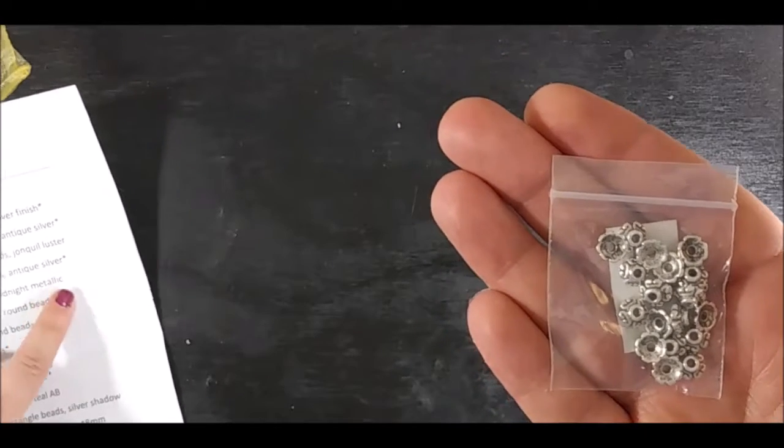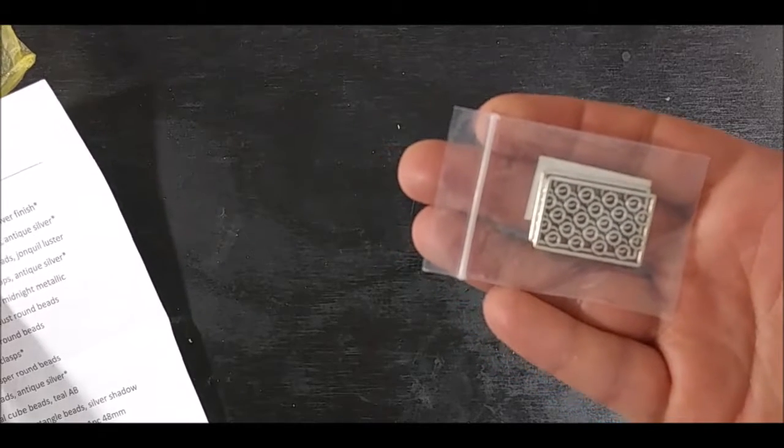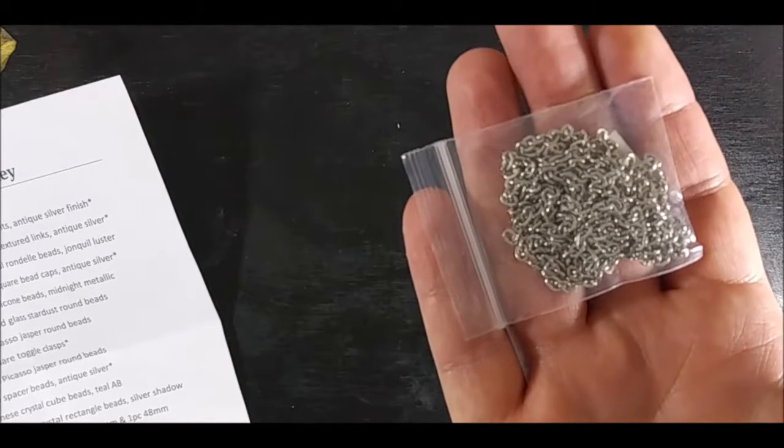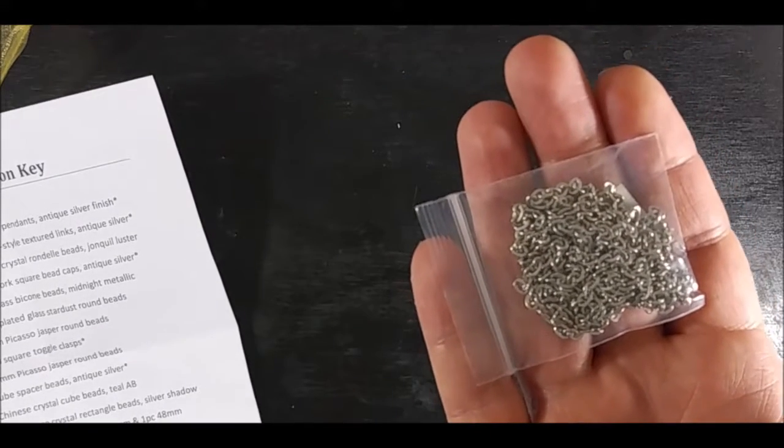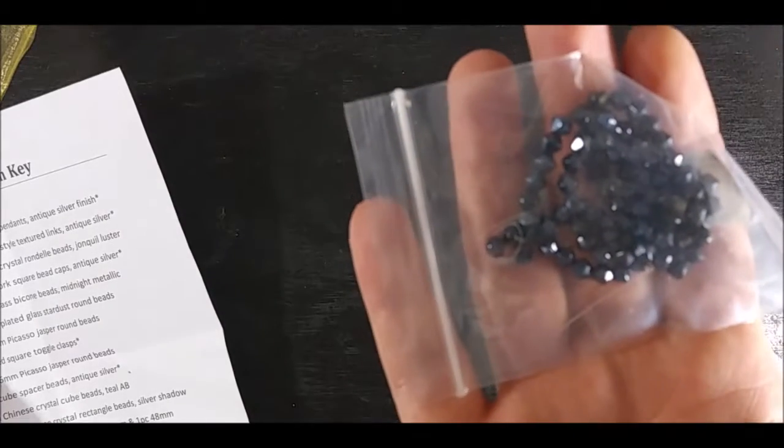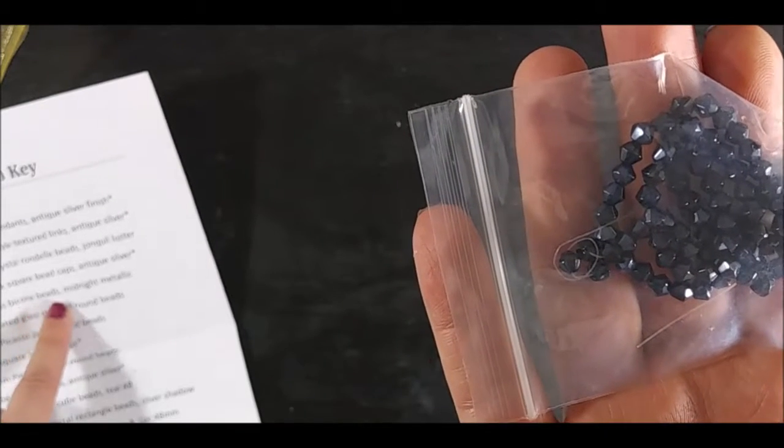This is 20 pieces of 6.5 millimeter scrollwork bead caps antique silver. This is 20 pieces of 26 by 18 millimeter rectangle pendants antique silver finish. This is a 50 piece, 4 millimeter cube spacer beads antique silver.